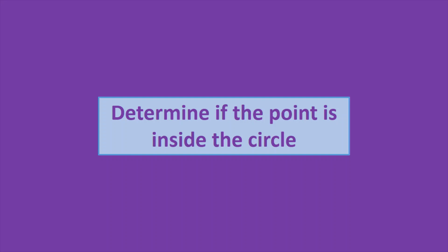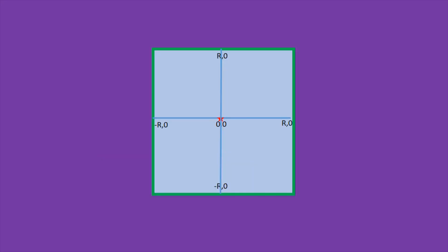So to determine if the point is inside the circle, first consider a square of length 2r with the center point as 0,0 and x and y axis ranging from minus r to plus r.